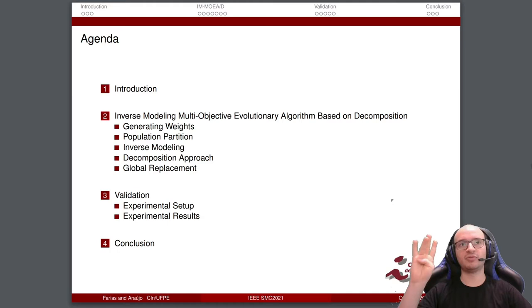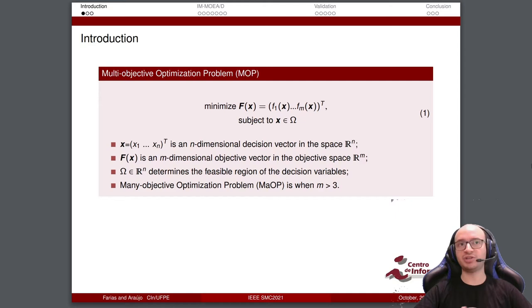Let's start. A multi-objective optimization problem (MOP) can be defined by this equation. Here we have the solution x, an n-dimensional decision vector. f(x) is an m-dimensional objective vector in the objective space. Omega determines the feasible region of the decision variables. When we have more than three objectives, that is m is more than 3, we have the many-objective optimization problem.